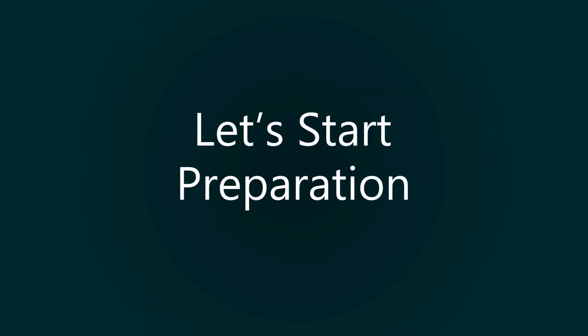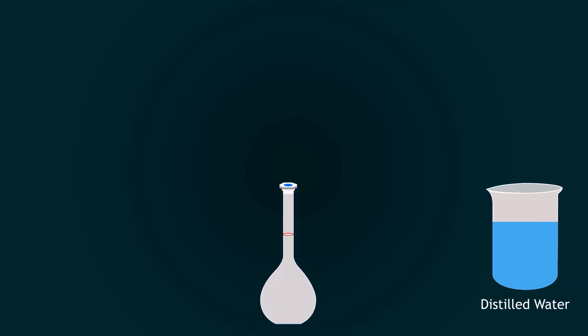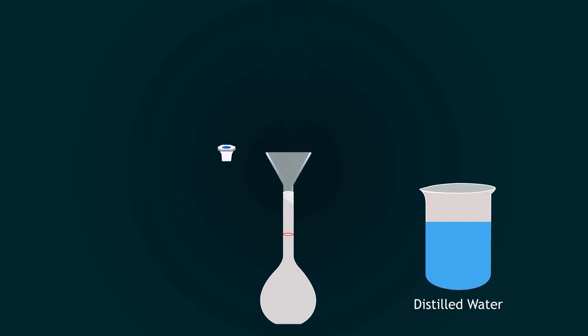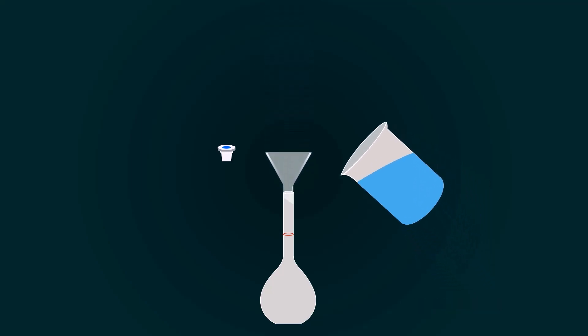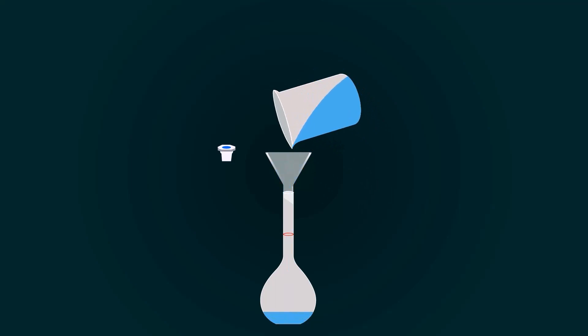Let's start preparation. First of all, take a 500 ml volumetric flask and add some distilled water into it with the help of a funnel. Please avoid adding sulfuric acid directly into the flask, because it may harm you or the flask.